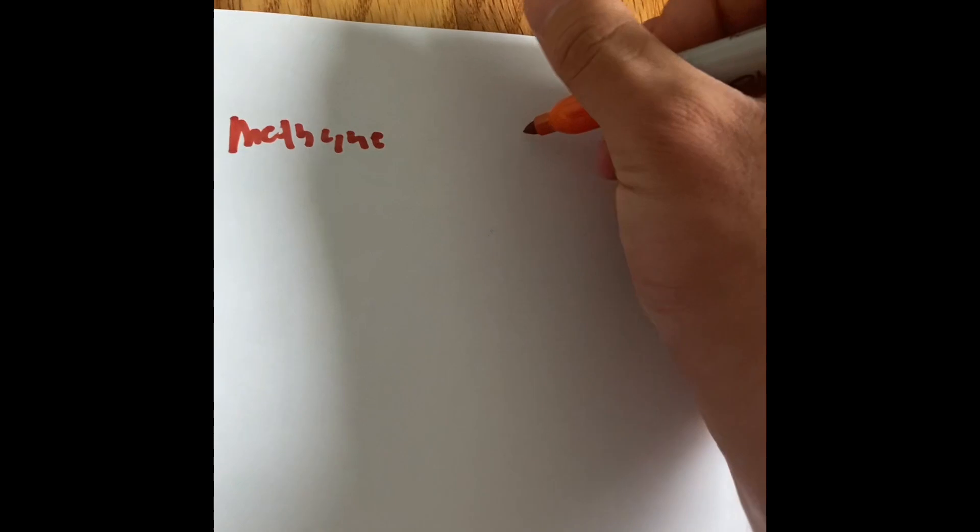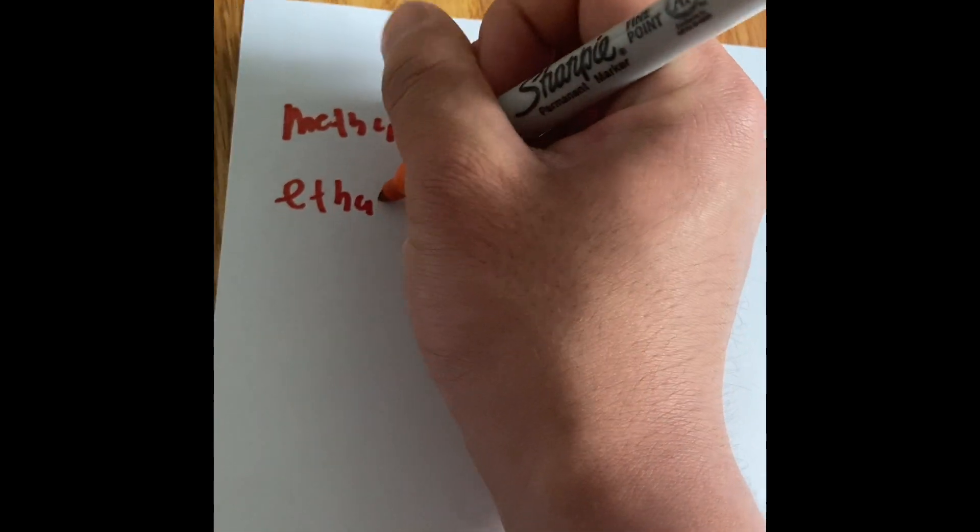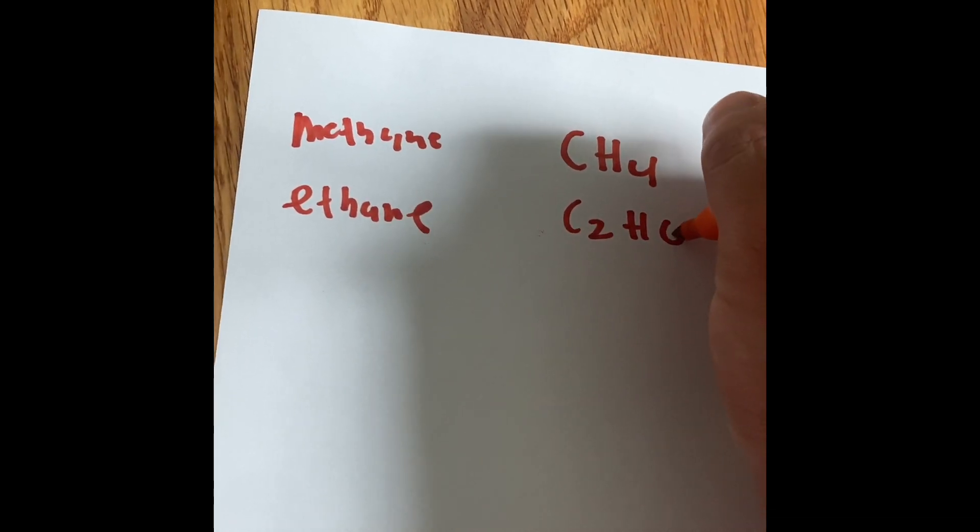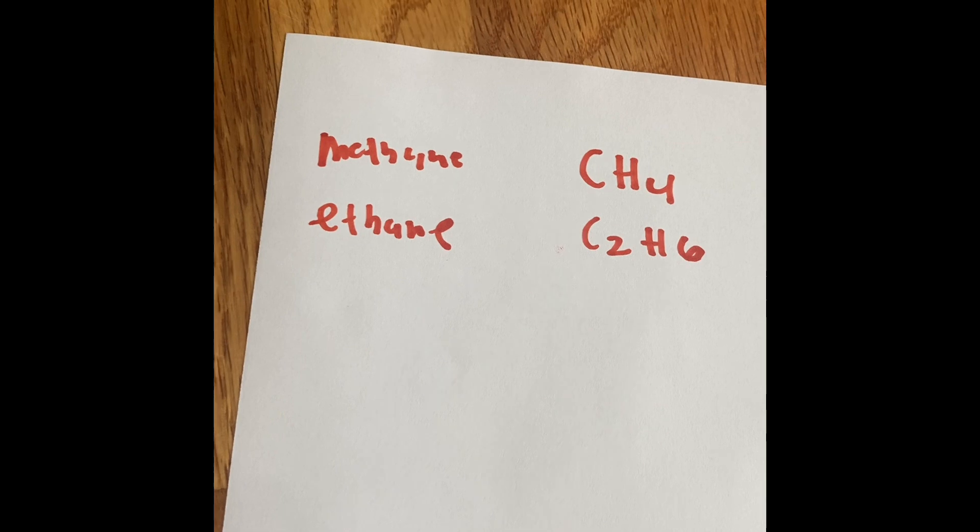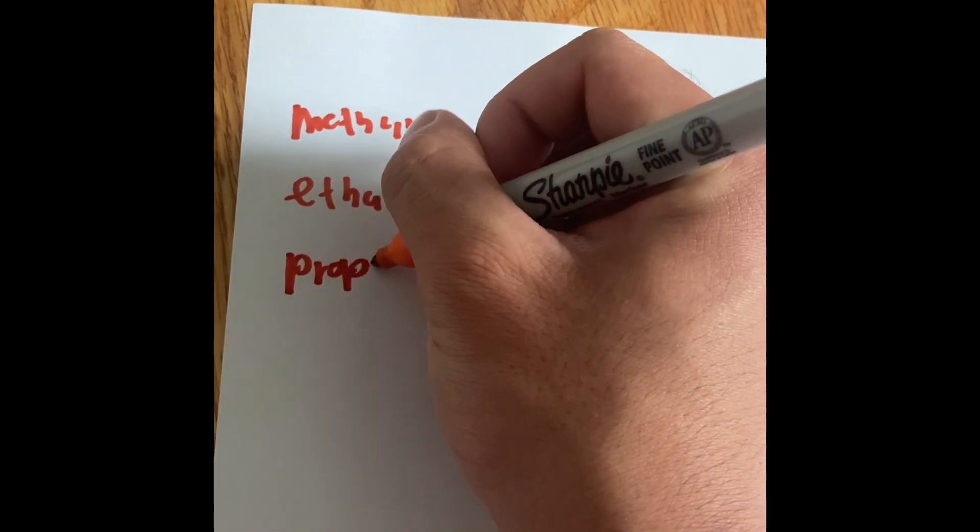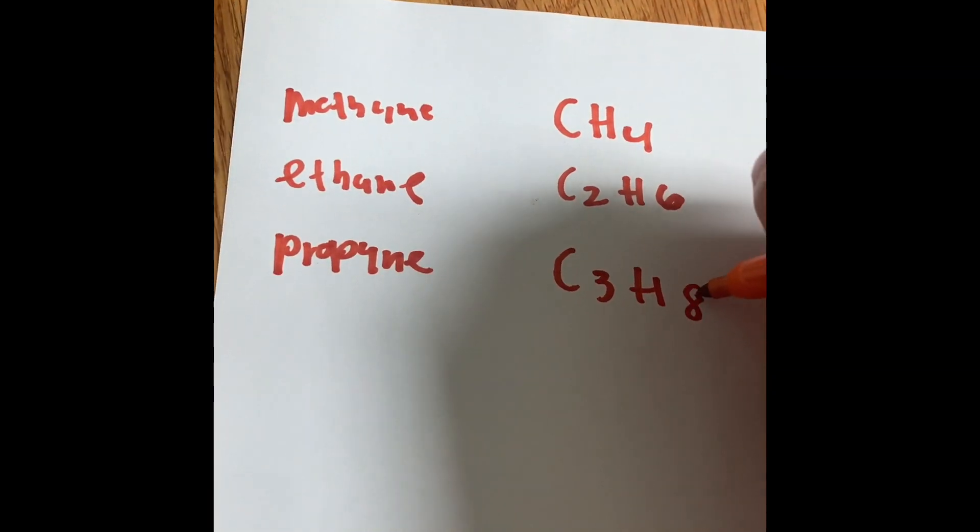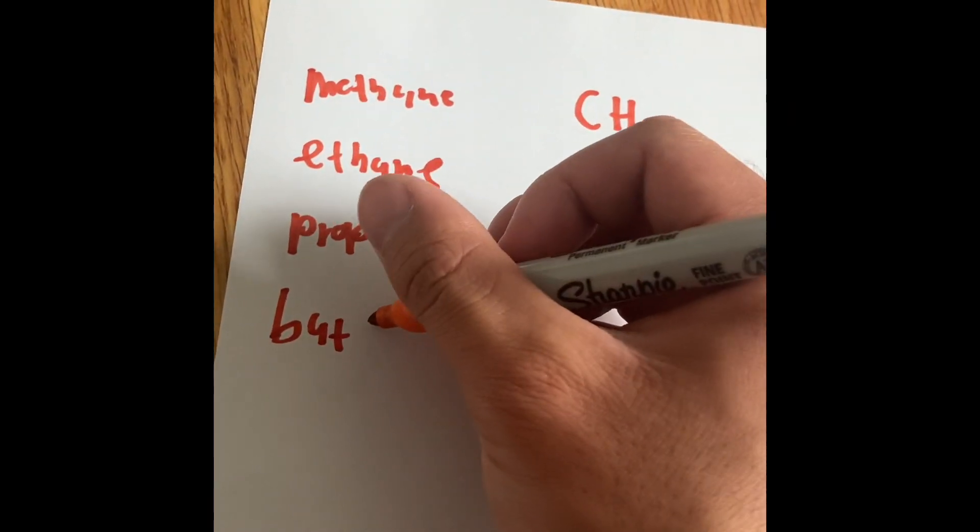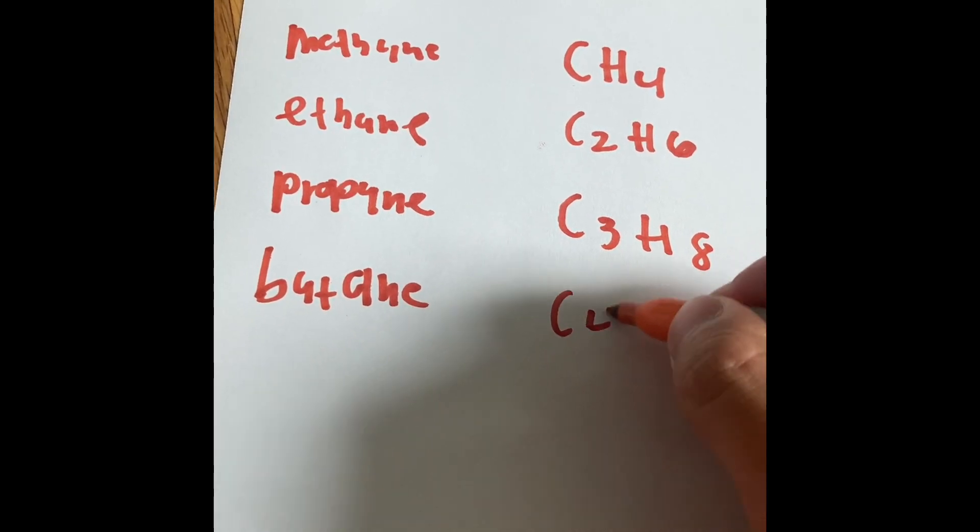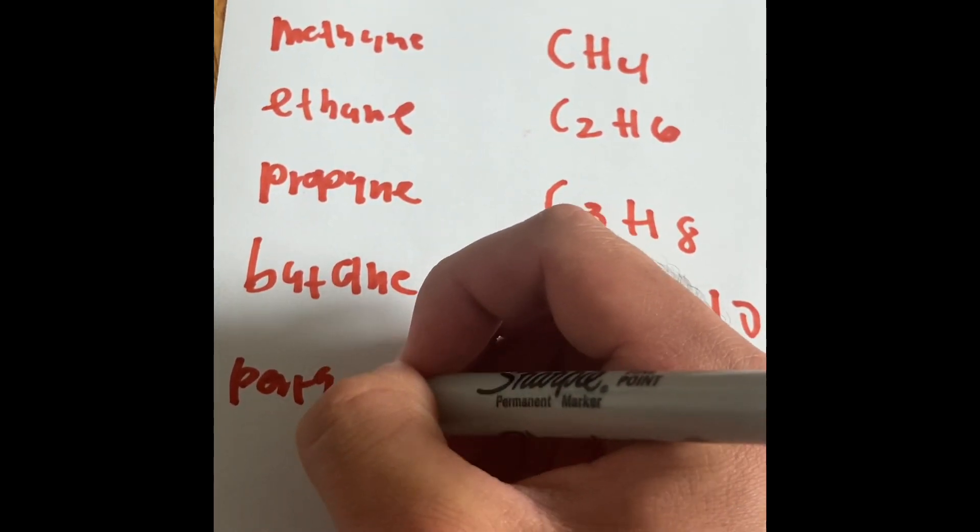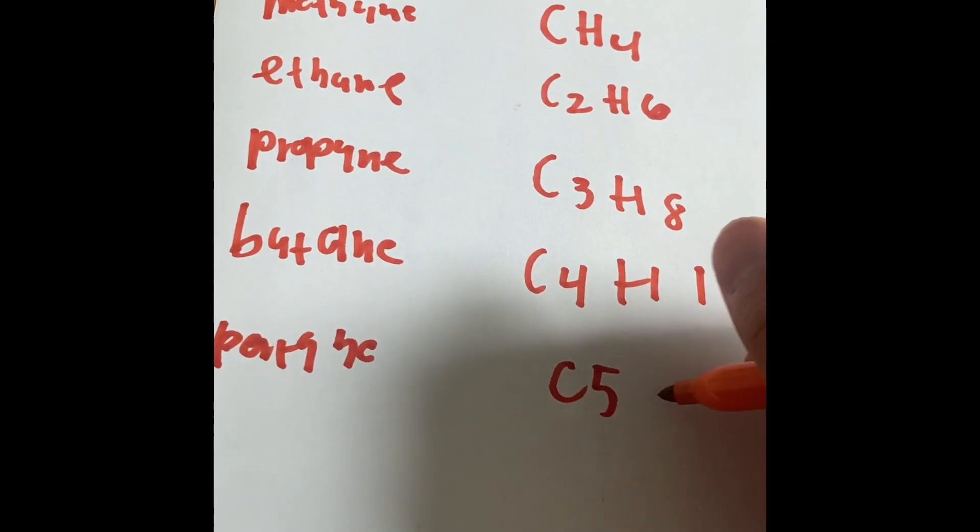For example, if we say methane, that is going to be CH4. If we say ethane, the ethical thing to do would be C2H6. And here's the one that powers up our grill, propane, and that is going to be C3H8. Butane is going to be C4H10. Pentane is going to be C5H12.